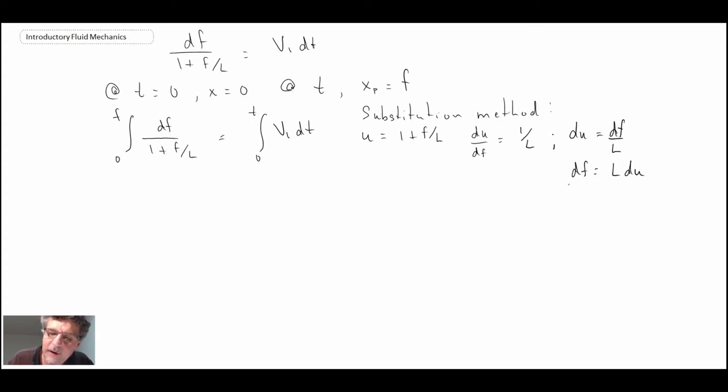And df is l du, which we can then substitute that into our integral. So what we're going to do, we're going to take df, and we're going to sub it in here. And we know from our substitution u is there. So let's make that substitution. And then what we're going to have to do is adjust the limits of the integration. So let's do that before we make the substitution. The limits of integration for 0 u will equal 1. And at f, u will equal, that would be 1 plus f over l.